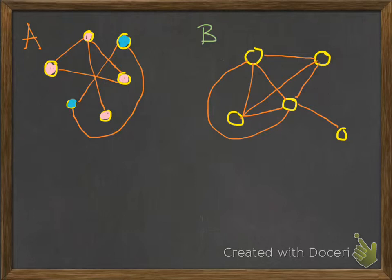B, however, is connected. You can get to any node from any other node. There's a path that could take you through all of them.